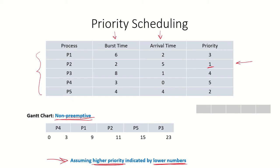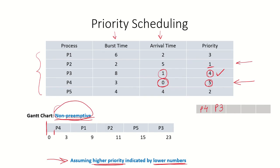At time 0, only P4 has arrived, so P4 is placed in the ready queue and given the CPU. At time 1, P3 arrives and is placed in the ready queue. P3 has priority 4 and P4 has priority 5, so P3 has higher priority. However, since the algorithm is non-preemptive, the CPU cannot be taken from P4, so P4 continues running.